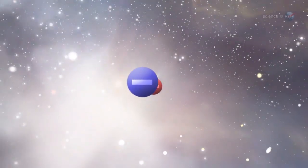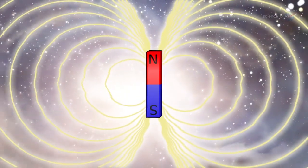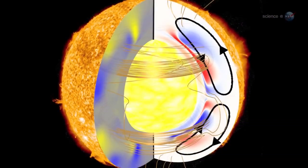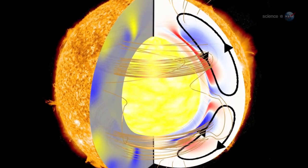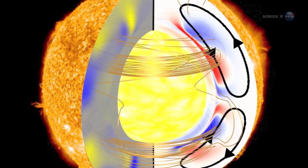The motions of the interstellar gas, which is an electric conductor, generate electric currents, which in turn generate magnetic fields. Similar currents move through the molten core of Earth and in the interior of the Sun, except this is on a vastly larger scale.